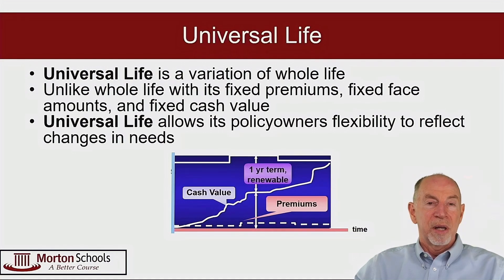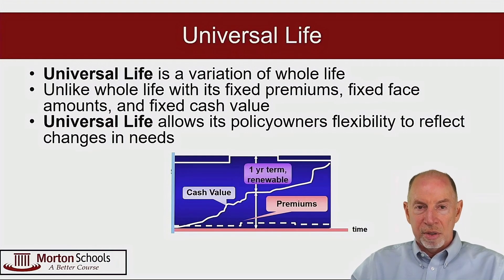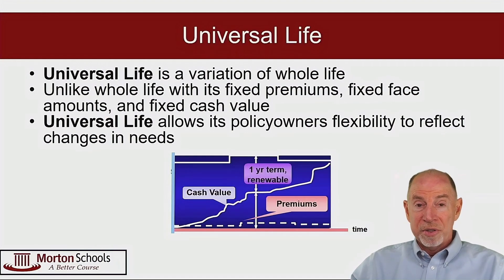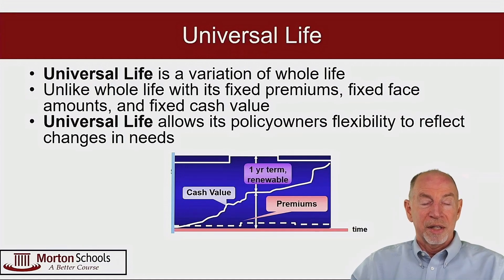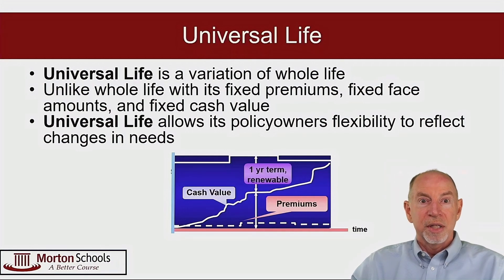In a whole life policy, there's a table of guaranteed values inside the policy. Because they build the policy on a certain interest rate — you have no control over that, it doesn't change. So they can guarantee exactly how much money you're going to have at age 65, age 75, age 85.